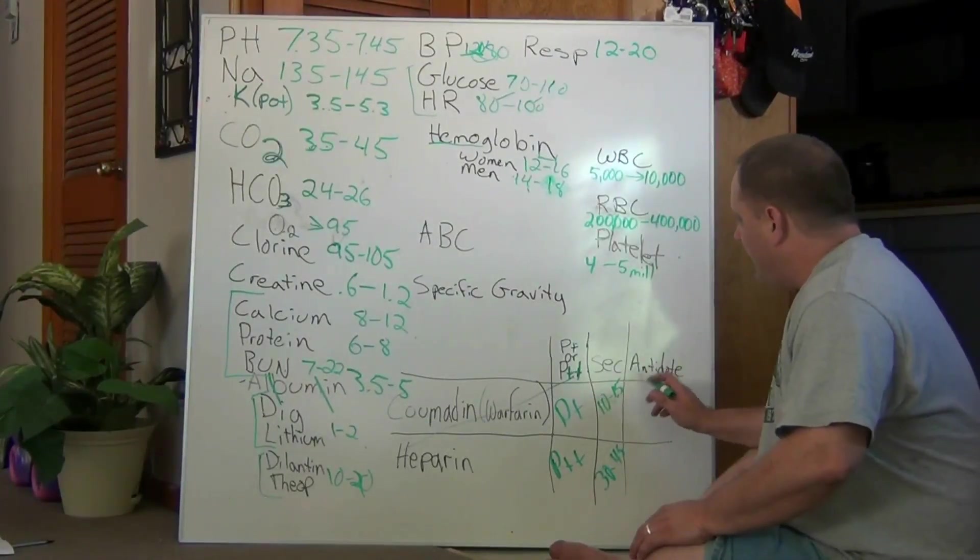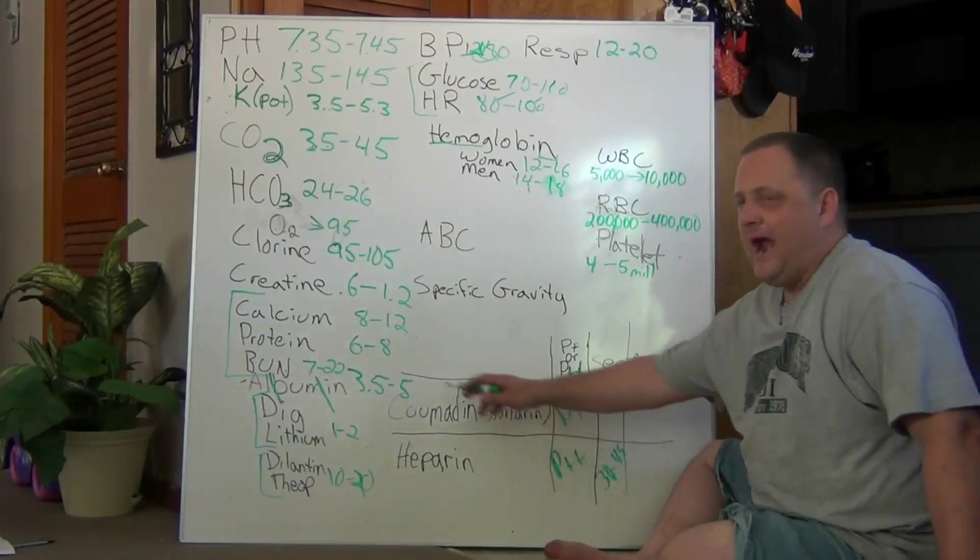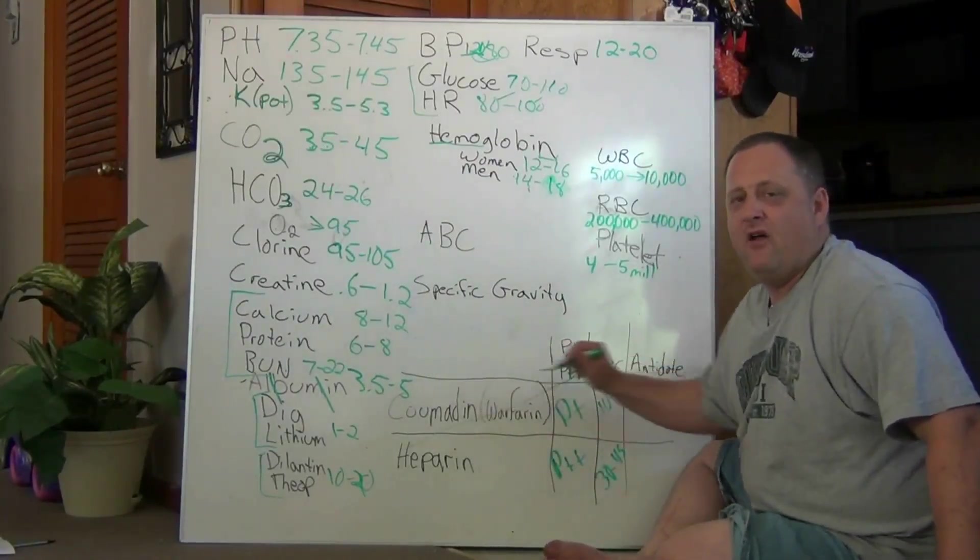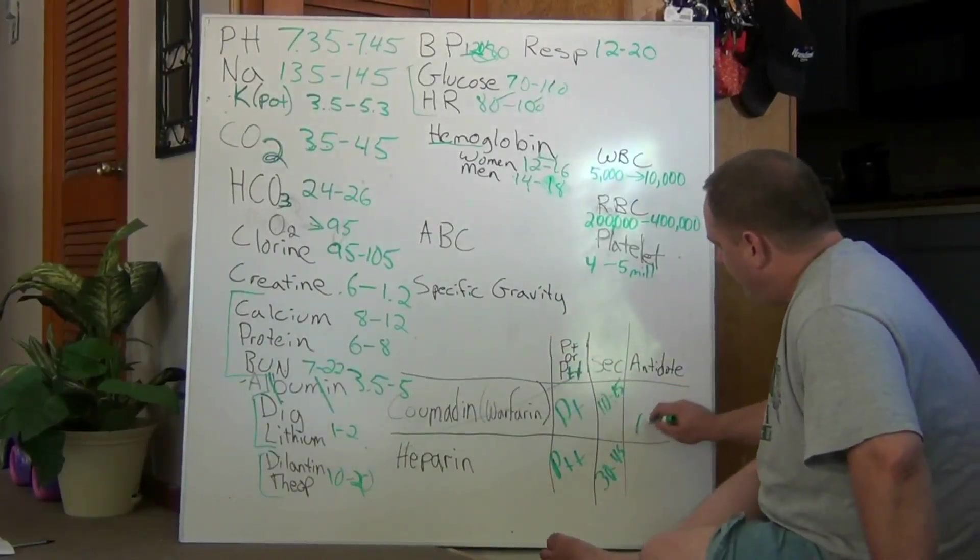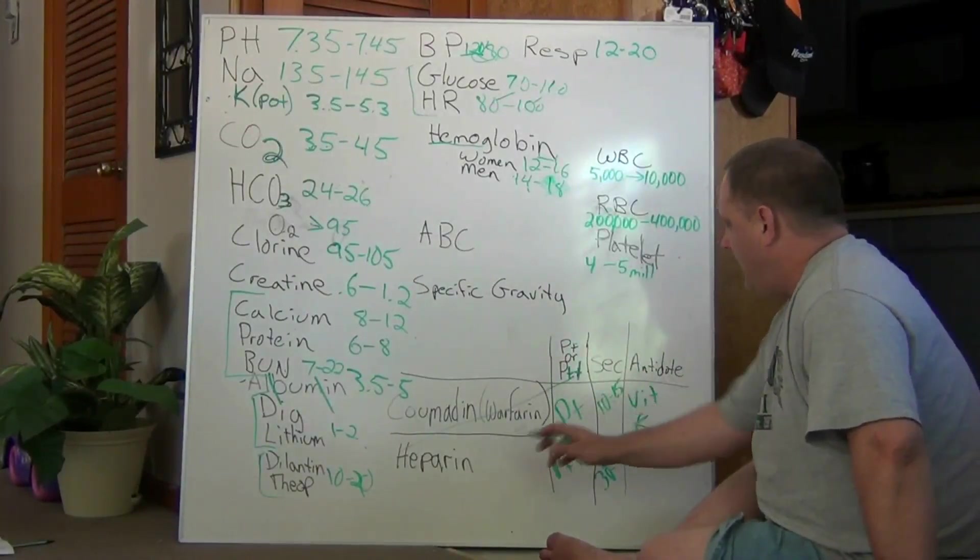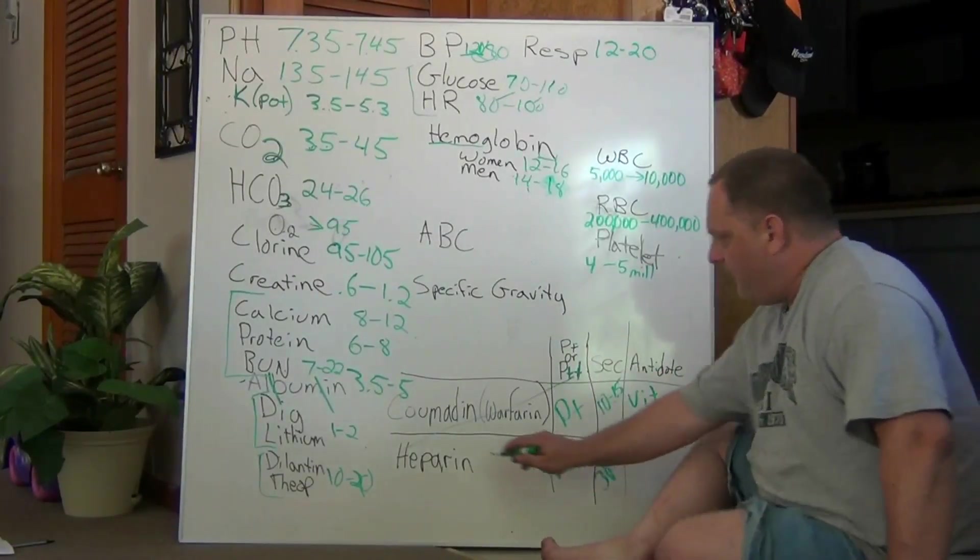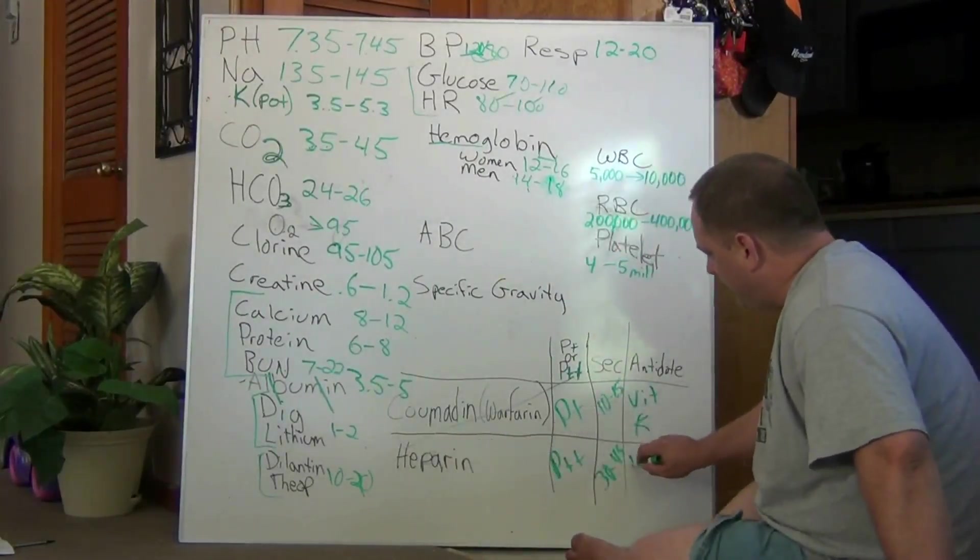Now let's look at the antidotes. If we can think of the Coumadin having the sound K, Coumadin, we get vitamin K. And on Heparin, if we can sound up the P, we've got protamine sulfate.